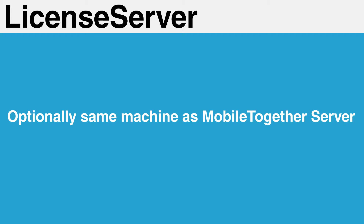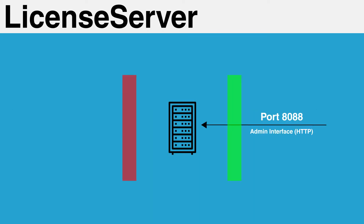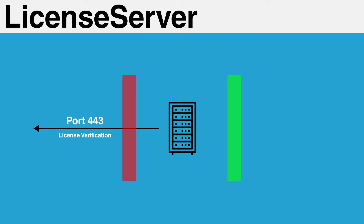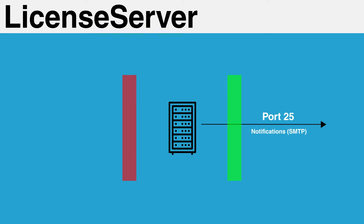First, let's talk about Altova license server. This server can be on the same machine as MobileTogether server, but it does not have to be. For this tutorial, we will assume that it is on the same machine. License server will listen on port 8088, which is used by administrators to connect via HTTP to administer the license server. License server will also communicate out to the Altova master license server on port 443, so please make sure this is open outbound. License server can optionally send emails to administrators notifying them when licenses are about to expire or when other issues arise — if you choose this functionality, you will need to allow access to your SMTP server, defaulting to port 25.